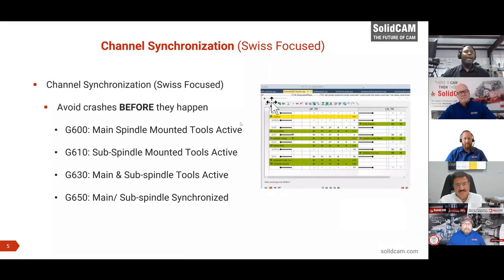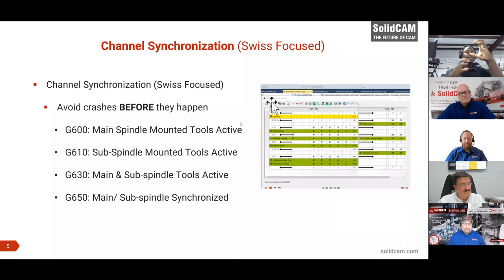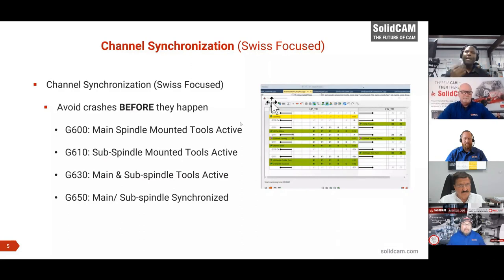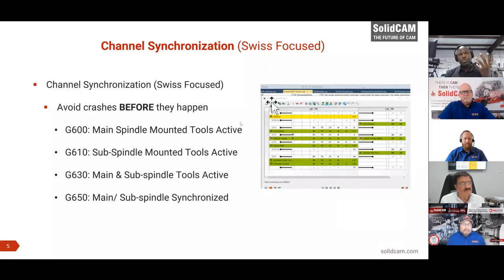Now let's talk about Channel Sync. Caveat: I have not crashed my machine once. In Swiss machines, you have G600, G610, G630, and G650. You have two Swiss heads that are independent — you have to deconflict them at all times. If you put the wrong code in, both heads meet and that's a crash. SolidCam has a channel sync function where you can see which spindle is using what axis, and if they're in conflict, it flags it. You deconflict both axes in real time. If it's not conflicted in the sync, it won't be conflicted in real life.